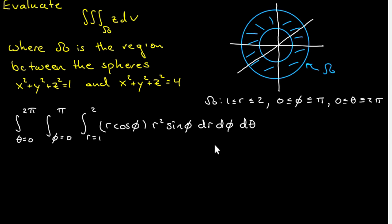The problem completely separates, so let's separate it. It'll be theta from zero to two pi d theta. Phi will go from zero to pi. Then I'll have a cosine phi, a sine phi. And then r will be between one and two, and I'll have an r cubed dr.